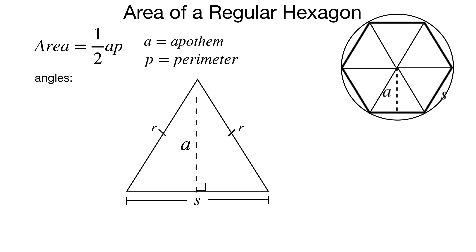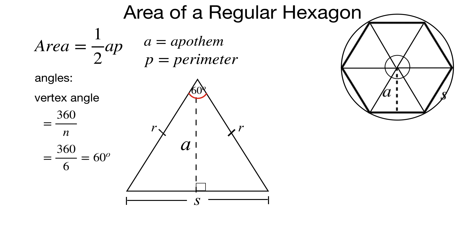Let's find the angles. That vertex angle at the top is 360 divided by N, where N is the number of sides. In the original picture, it's a circle, so all those angles are congruent because of the regular triangles created by this regular polygon. So we take 360 degrees — the number of degrees in a circle — and divide by N. For a hexagon, N is 6, so that vertex angle is 60 degrees.